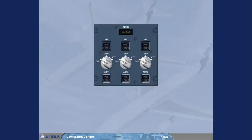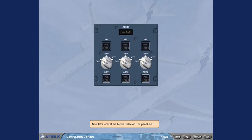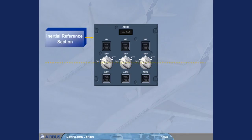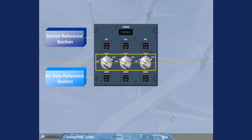Now let's look at the Mode Selector Unit panel, MSU. The panel is divided into two parts: the upper section for the IR and the lower section for the ADR. The three rotary mode selectors have control over both the IR and the ADR.